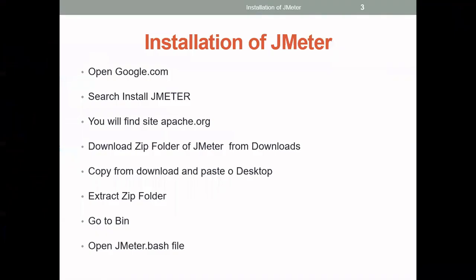Once you have extracted the zip folder and copied it to the desktop, go to the bin folder and open the JMeter batch file. This is how the installation of JMeter is completed. The next processing on that batch file will be shown in the next video.